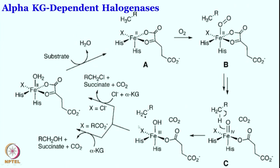In the earlier case when X is aspartate, there is no halogenase chemistry and the hydroxo is close to the radical, enabling hydroxylation, with succinate and carbon dioxide as byproducts. So, by changing just one ligand — replacing the iron-aspartate with iron-halide — nature can completely control the reactivity. Everything else remains the same, but all of a sudden no hydroxylation products are forming; instead, exclusively halogenation products are forming.